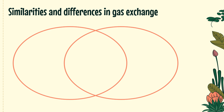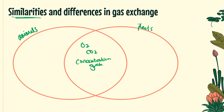Wrapping up with a comparison of gas exchange in animals and plants — see the other B3.1 lecture video for the animal details. Similarities: both animals and plants exchange carbon dioxide and oxygen; that exchange happens due to differences in concentration, with concentration gradients allowing gas exchange to occur passively; and both have thin, moist surfaces with lots of surface area for efficient gas exchange.